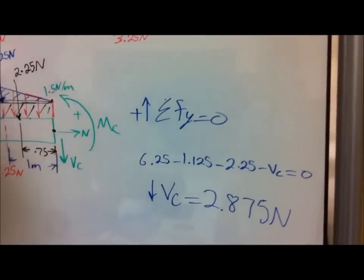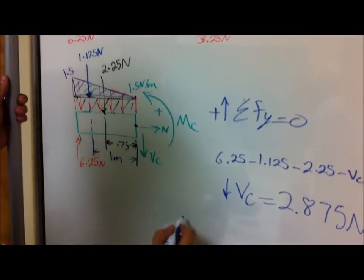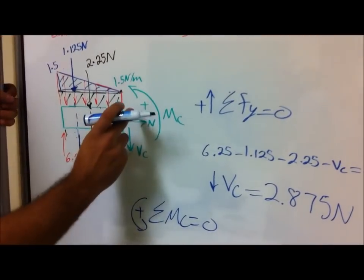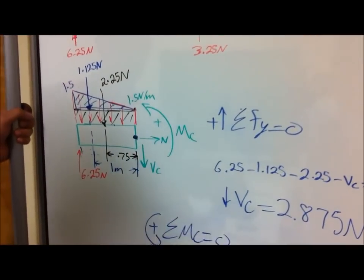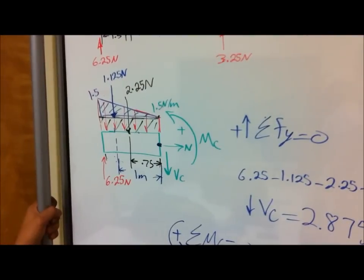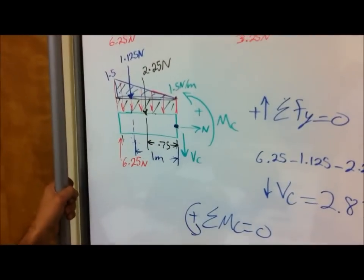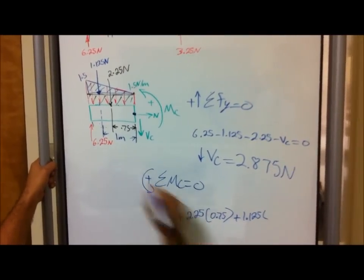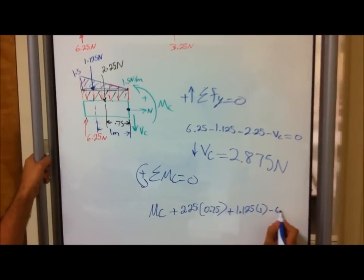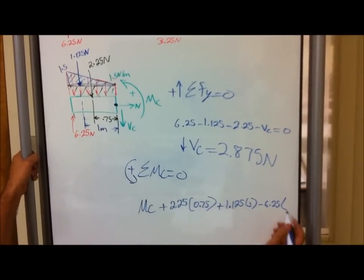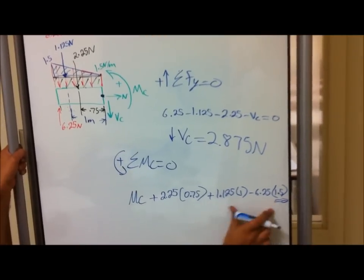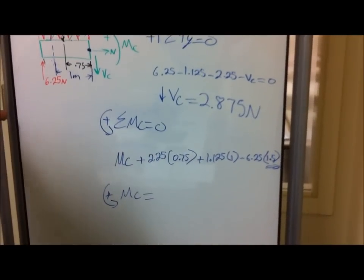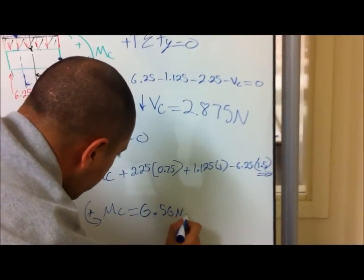Now we calculate the moment at C. Taking the moment at C equals zero with counterclockwise as positive: M-C plus 2.25 times 0.75 plus 1.125 times 1 minus 6.25 times 1.5 equals zero. Solving, the moment at C equals approximately 6.56 N·m.